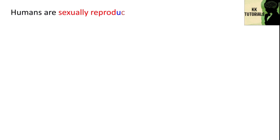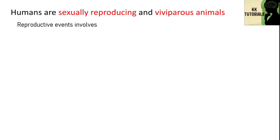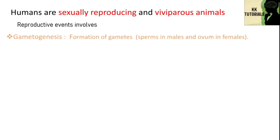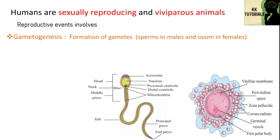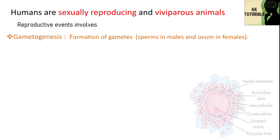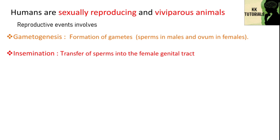As we know, humans are sexually reproducing and viviparous animals. Viviparous organisms means organisms producing living young instead of eggs. There are some terminologies you must know before starting the actual anatomy and physiology of the reproductive system. The process of reproduction involves various sequential steps, such as gametogenesis — the formation of gametes, that is sperms in males and ovum in females — and insemination, that is the transfer of sperms into the female genital tract. Internal fertilization involves fusion of male and female gametes, leading to formation of a zygote.